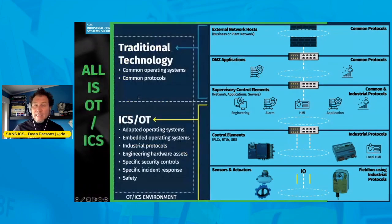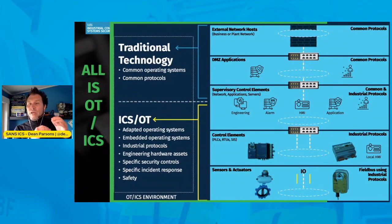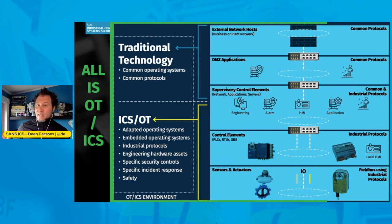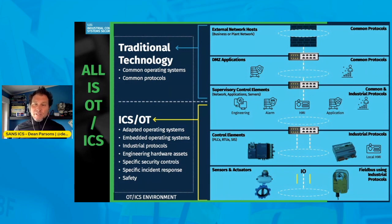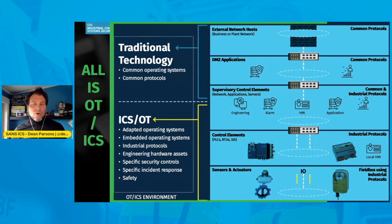Looking at the Purdue levels generally, at the upper levels we see traditional technologies — common protocols and common operating systems, still on OT or ICS assets. As you go below that, there are more specific, applied, or adapted operating systems, embedded operating systems, industrial control protocols, engineering hardware assets, and specific security controls for ICS and OT, as well as safety considerations.